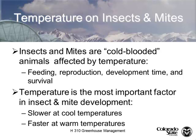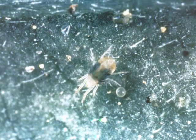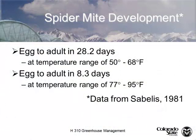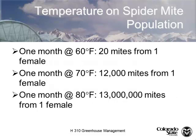Insects and mites are cold-blooded — they're temperature related. This is a two-spotted spider mite with its eggs. From 50 to 68 degrees Fahrenheit, egg to adult takes 28.2 days. At 77 to 95 degrees, it's only 8.3 days. We don't typically see spider mite problems in cool greenhouses — let your greenhouse get too warm and you're going to run into problems. One month at 60°F: 20 mites from one female. One month at 70°F: 12,000 mites from one female. At 80°F: 13 million mites from one female.